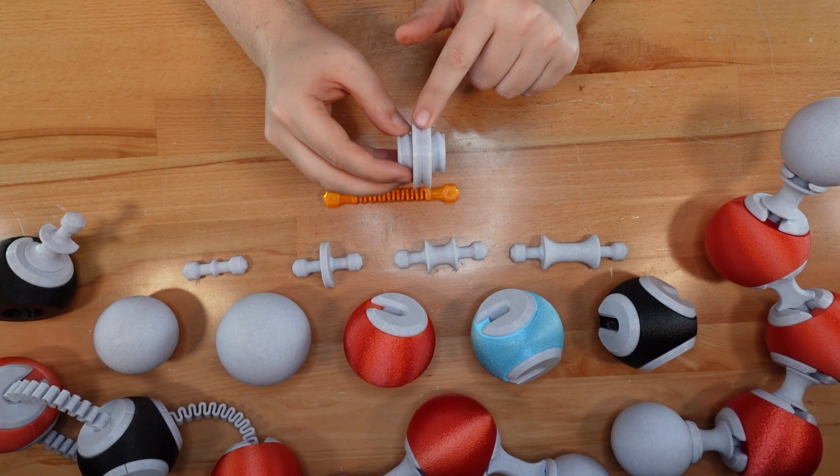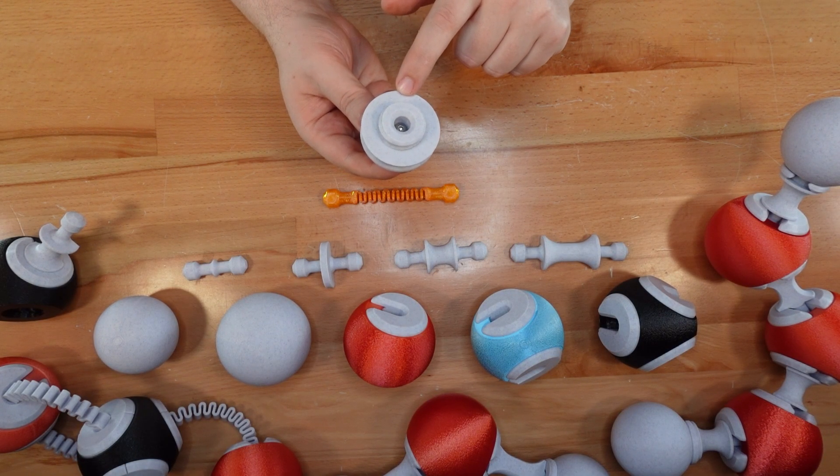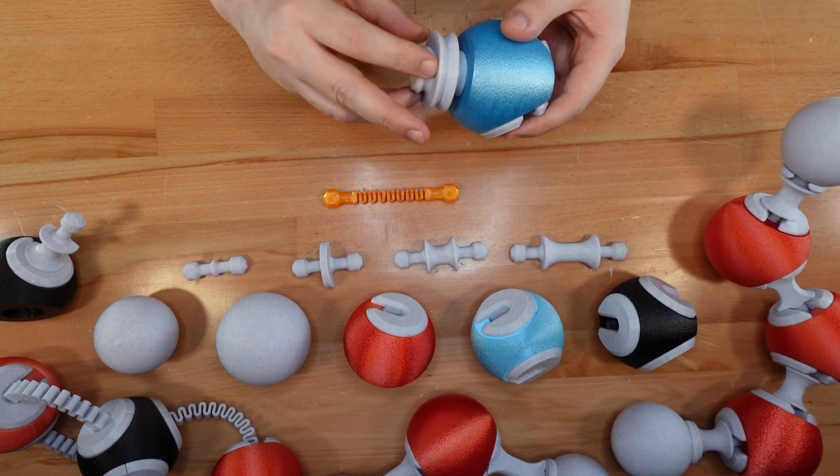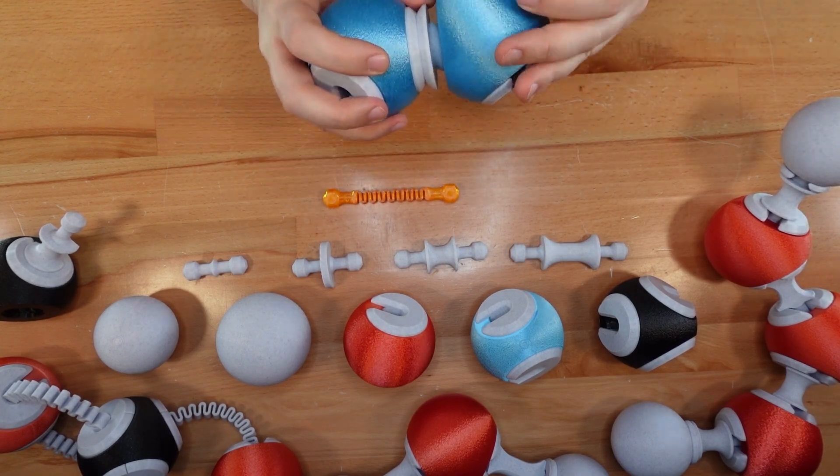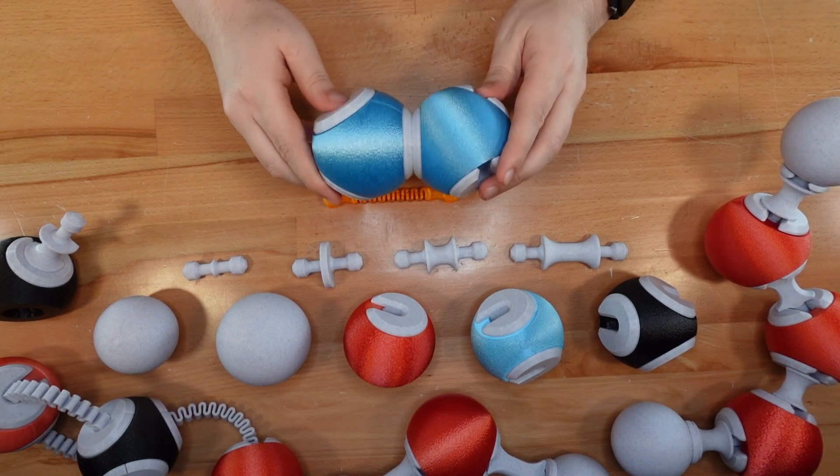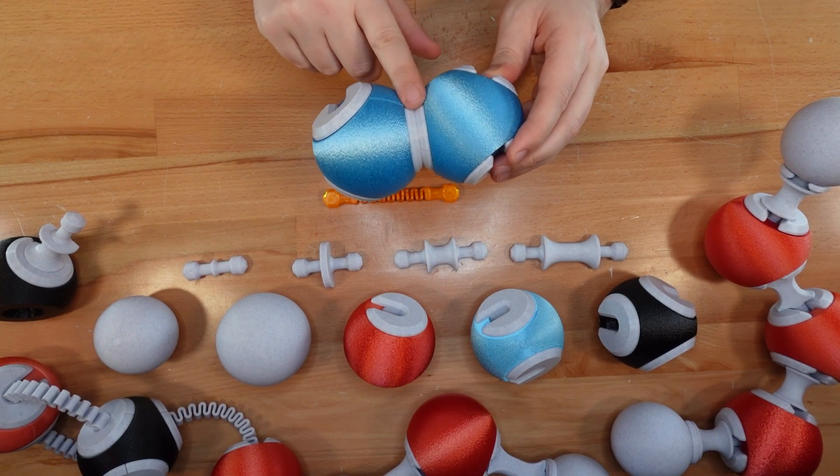For that, you can use these alternate caps that lock together with an M5 socket head bolt and a nut. Once the cap is attached to the atom, the hardware is completely hidden. You can even take this a step further and add a bit of glue to the cap heads.